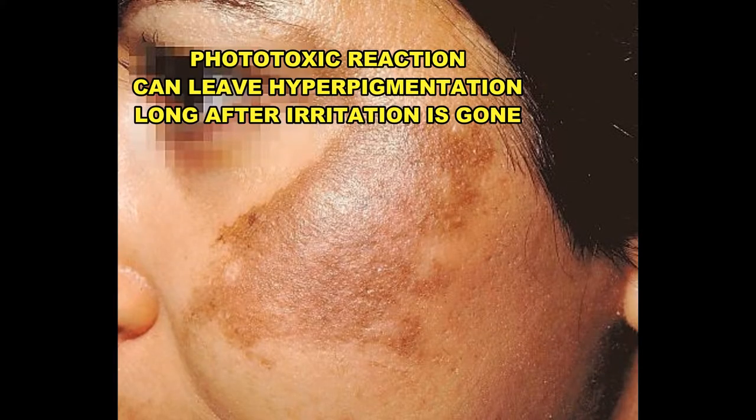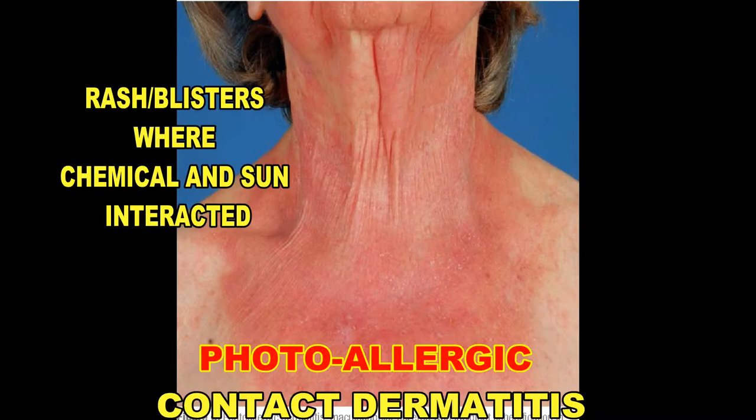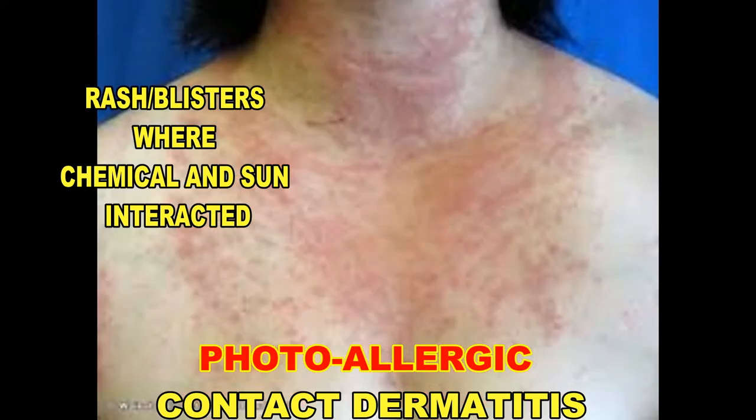It may leave hyperpigmentation long after the initial irritation is gone. There's also a photoallergic reaction, which generally looks like a rash or irritation confined to the area in contact with the responsible chemical that has been exposed to the sun.